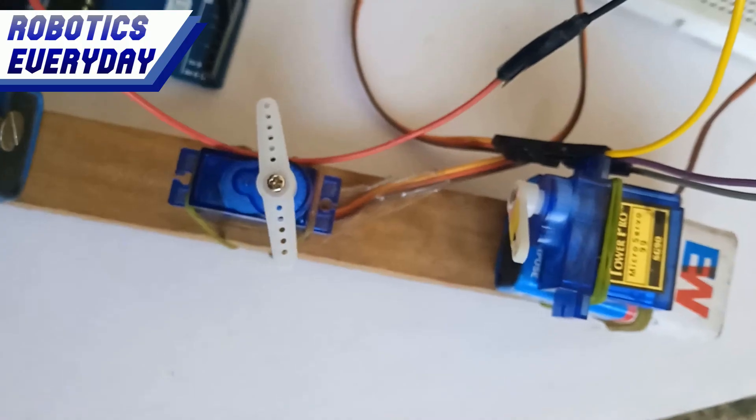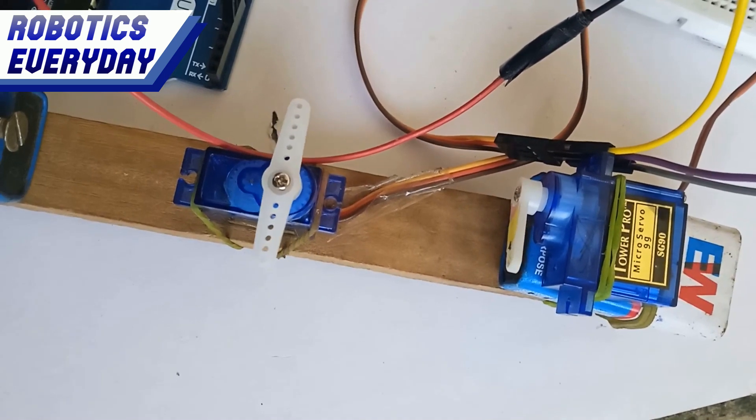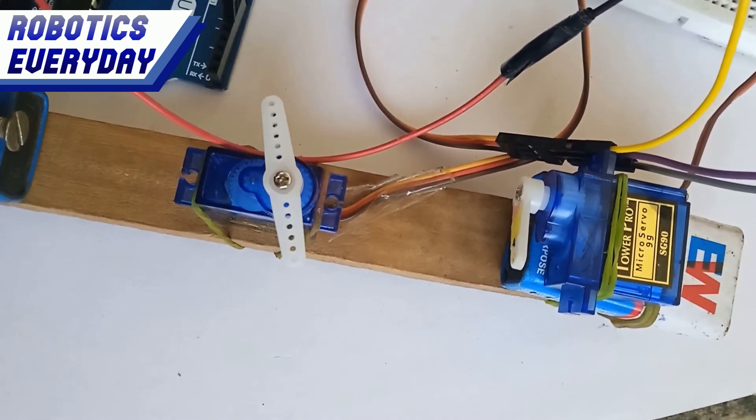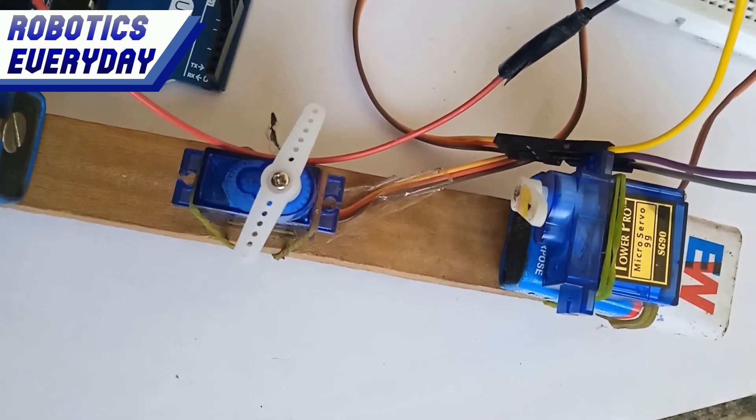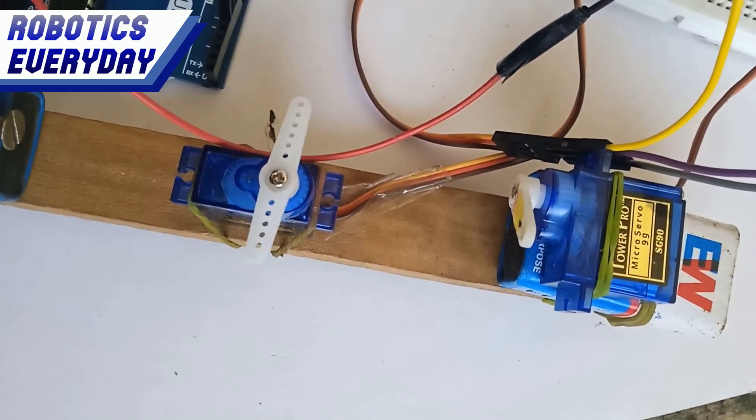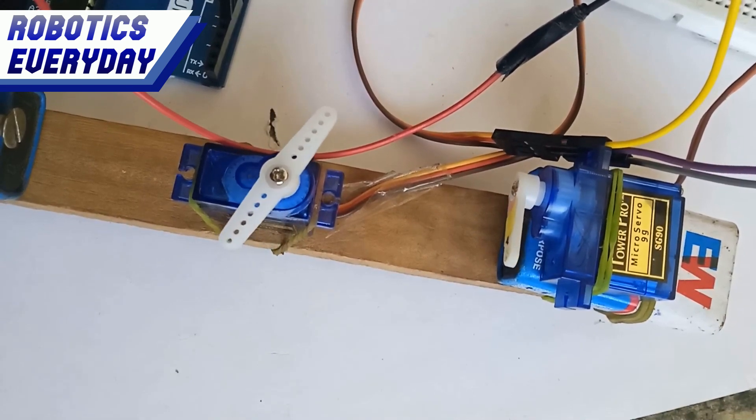The eyeball of this robotic eye setup utilizes a separate servo motor that rotates its horn horizontally. This servo motor is responsible for moving the eyeball. By attaching the eyeball to this servo motor, the robotic eye gains the ability to move its gaze from left to right and back.